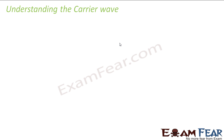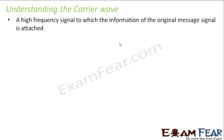Now let us try to understand the carrier wave in detail, because whenever we talk of modulation, we will be talking about a high frequency wave. Our message signal is a low frequency wave, but how are we going to translate it into a high frequency wave? With the help of another high frequency wave, which is known as a carrier wave. Taking the previous example of a letter — the letter is our low frequency message signal and the train is a high frequency wave. So a high frequency signal to which the information of the original message signal is attached.